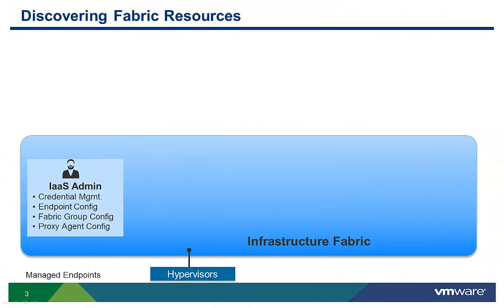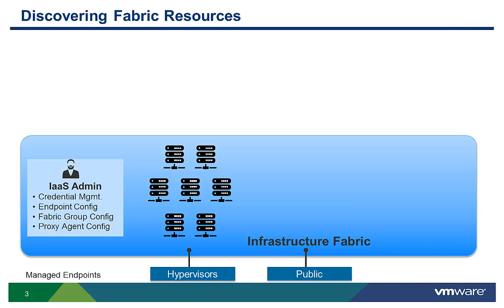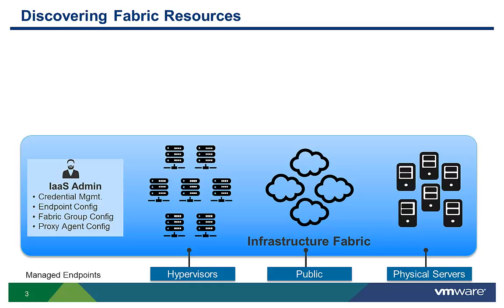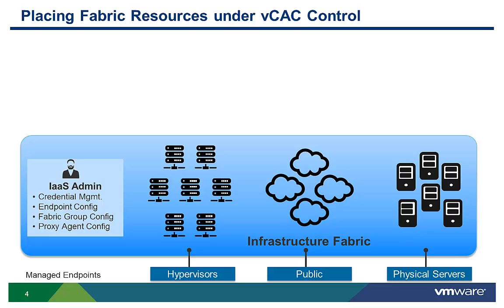In the Discovering Fabric Resources video, we defined the management endpoints and vCloud Automation Center went out and discovered all the virtual, physical, and cloud resources that could potentially be used by vCloud Automation Center. Just because vCloud Automation Center discovers these resources does not mean that they can be used to provision new virtual machines and applications — they first must be organized and then allocated to the different tenants and business groups.